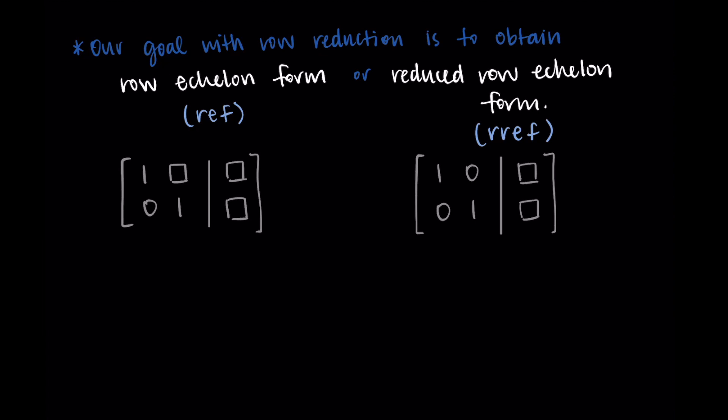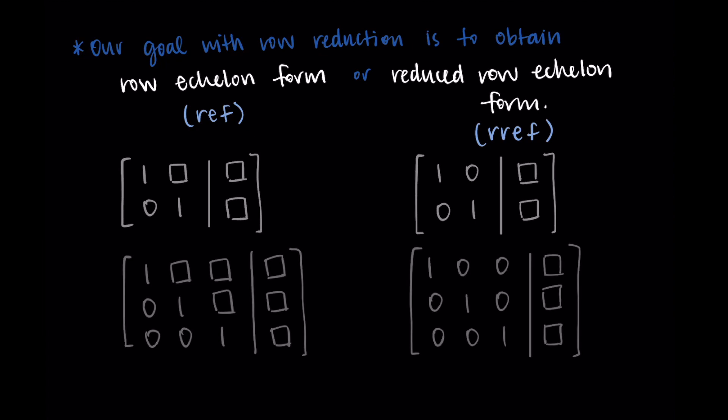The three-dimensional version looks similar. So in just row echelon form, we have ones on the diagonal and zeros on the bottom. And then we can have whatever we want in those boxes. In reduced row echelon form, we have ones on the diagonal and zeros everywhere else. So it looks like one, zero, zero, zero, one, zero, zero, zero, one.